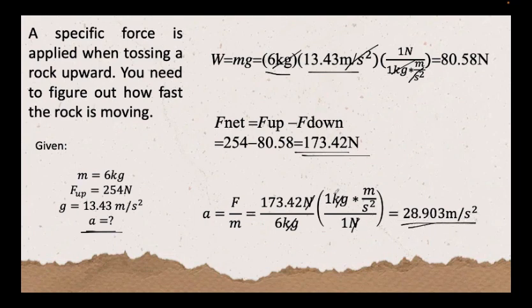So, to sum it all up, first we have to find what is the weight, multiply the mass by the specific gravity given. Then, next is to find the net force which is the upward force minus the downward force. And lastly for the acceleration, we have to divide the force over the mass.